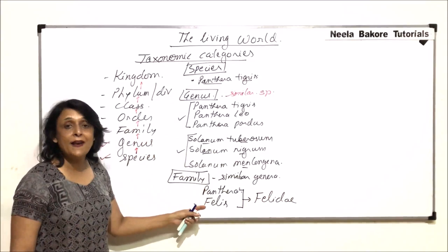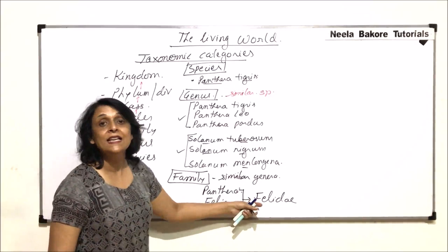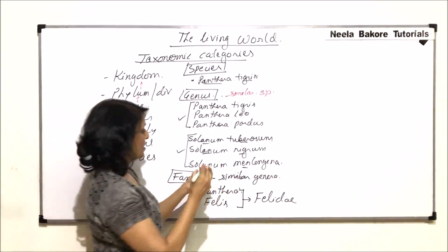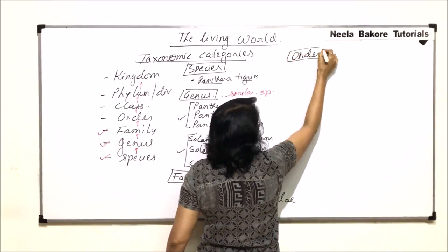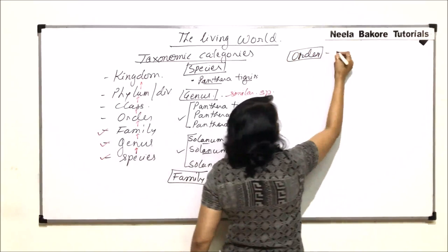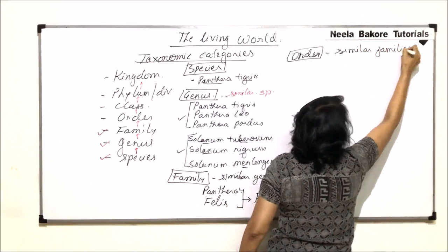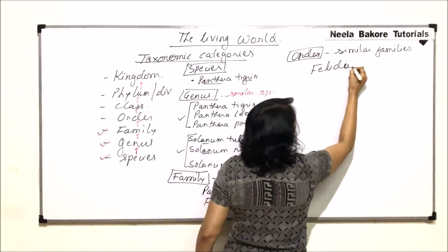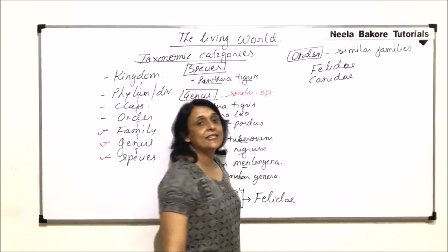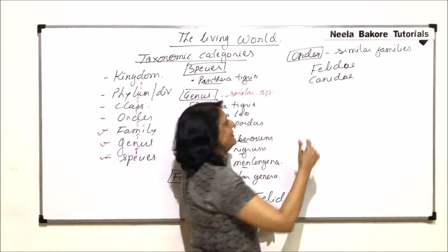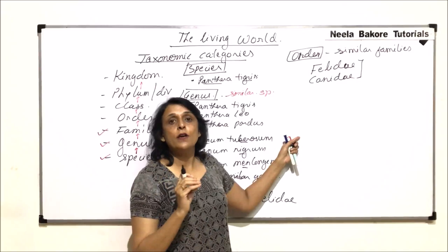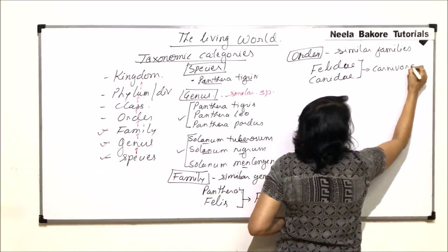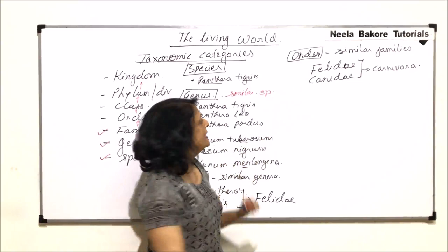So, genera Panthera and genera Felis are placed in the same family. Similar genera are placed in the same family. Now, the next category is order. Order is a category in which we put similar families. For example, the family Felidae — the cat family — and the family Canidae — the canine or dog family — are placed in the same order. That order is called Carnivora. So, one order is going to have similar families.